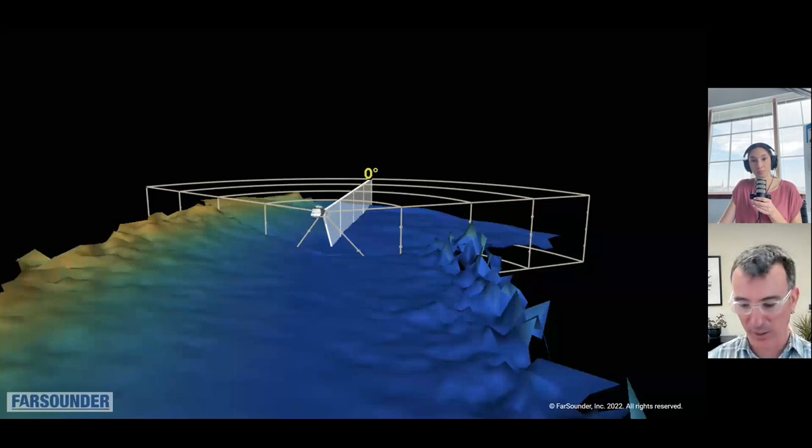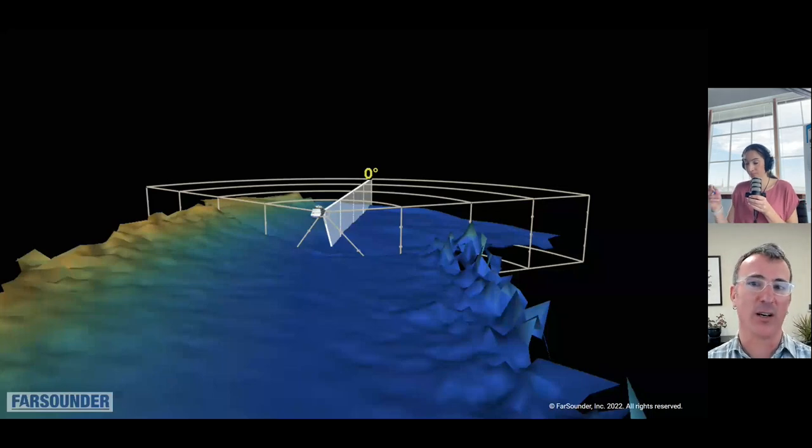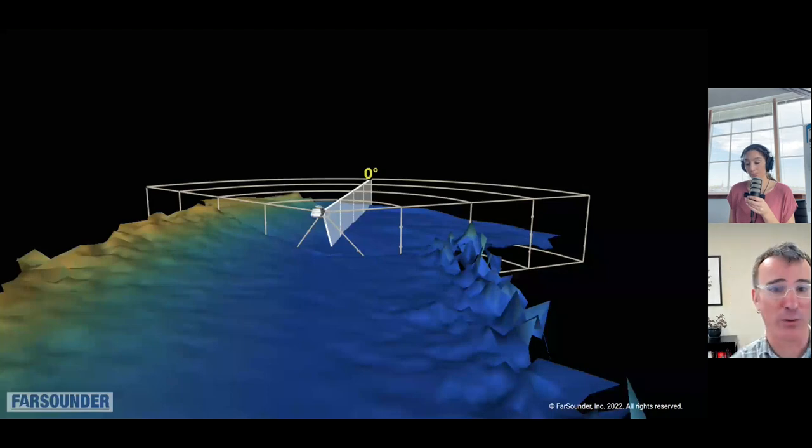Our systems are designed to see the types of things that boaters really care about hitting—things like coral reefs, ice if you're going up into the polar regions, large whales, rocky pinnacles, shipping containers that fall overboard during the shipping process, and all sorts of other unknown obstacles.